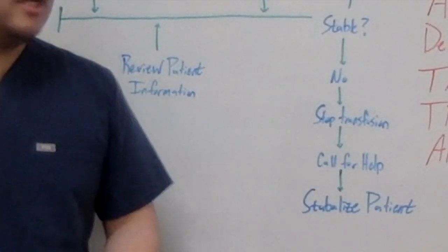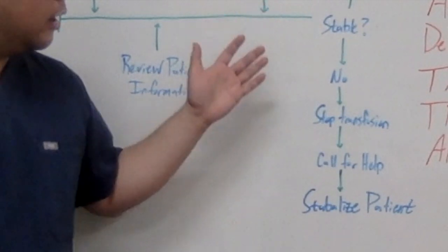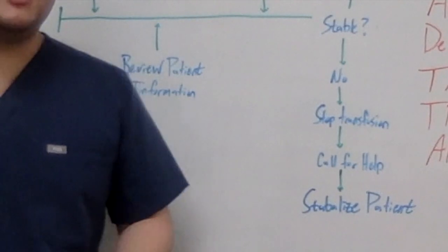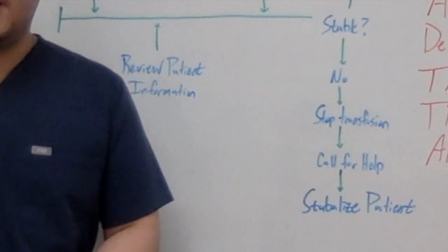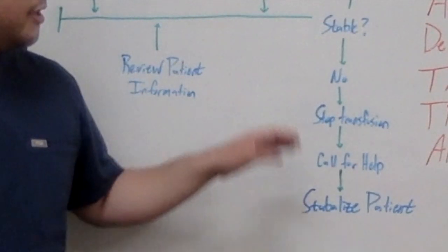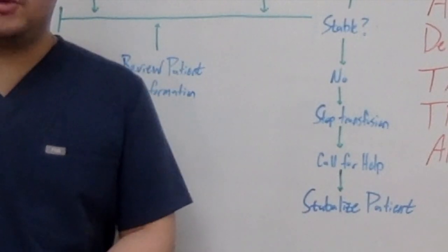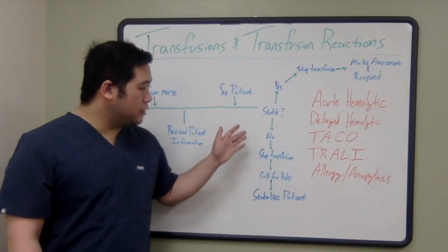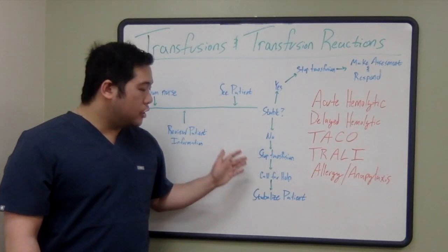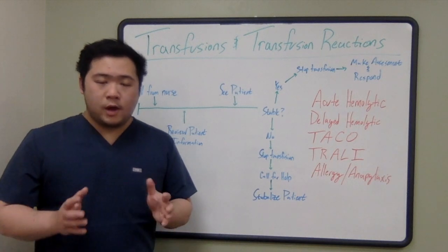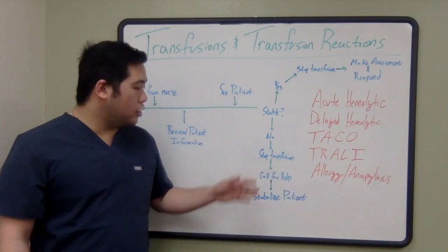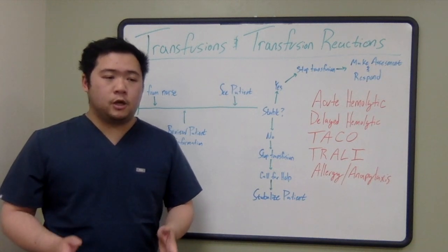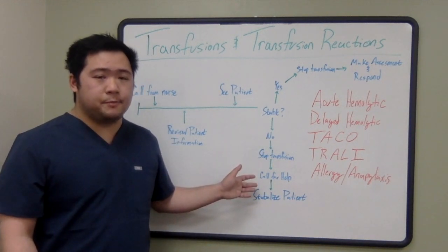If they're decompensating and don't look stable, I always stop the transfusion. This might not be what's driving what's going on right now for this patient, but by stopping the transfusion, I eliminate additional variables that could be impacting what's going on. If they're truly unstable, I want to know that I can call for help. Even though I'm covering this patient overnight, if I'm worried about their stability, I want to make sure that I'm asking for help, especially if I feel that this patient is going to acutely decompensate.